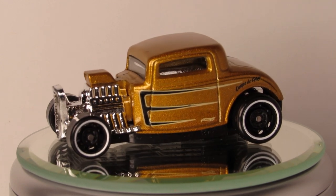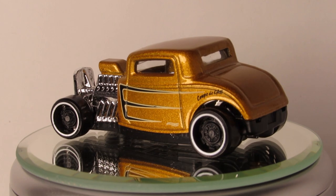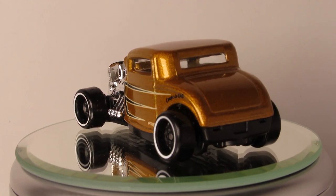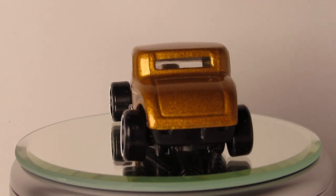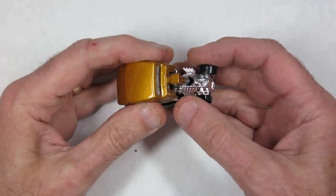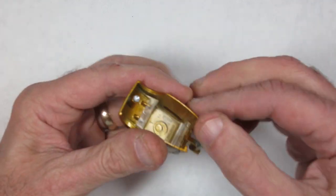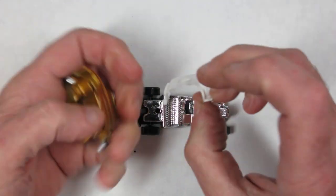I happen to have this little guy sitting around, so I thought, what the heck? It's an opportunity to chop something up. I took it apart—metal body, plastic interior, plastic base, there you can see the windshield.